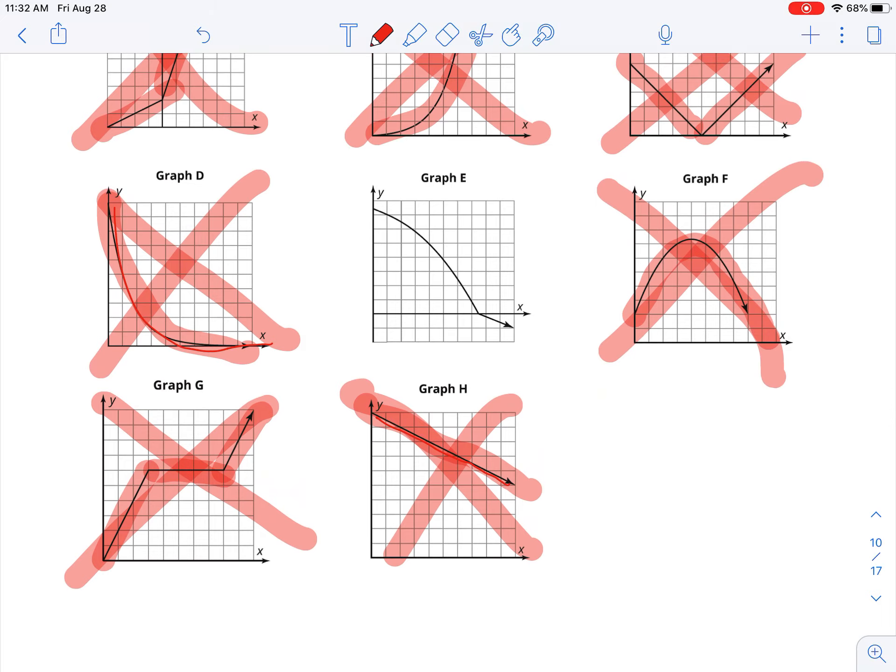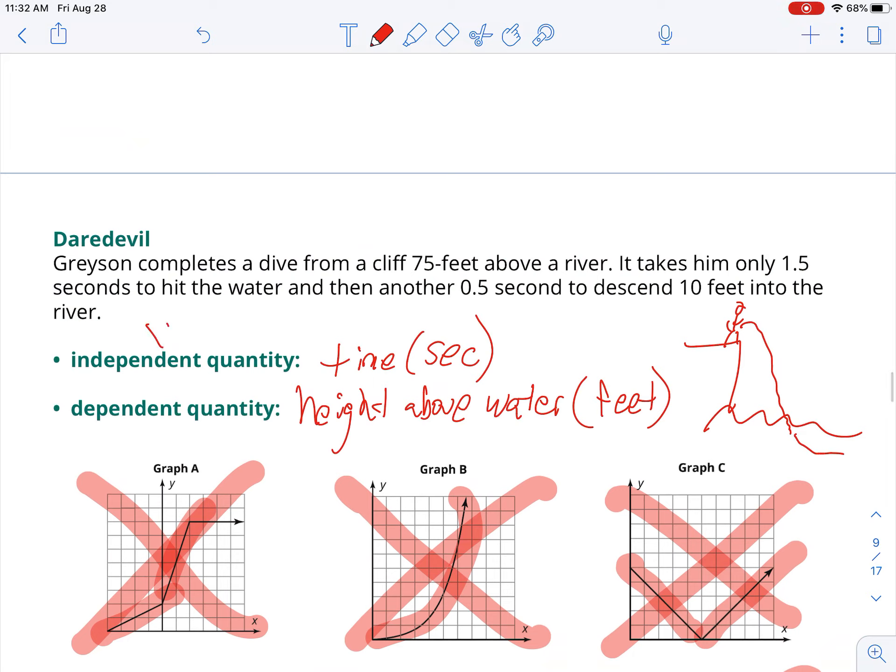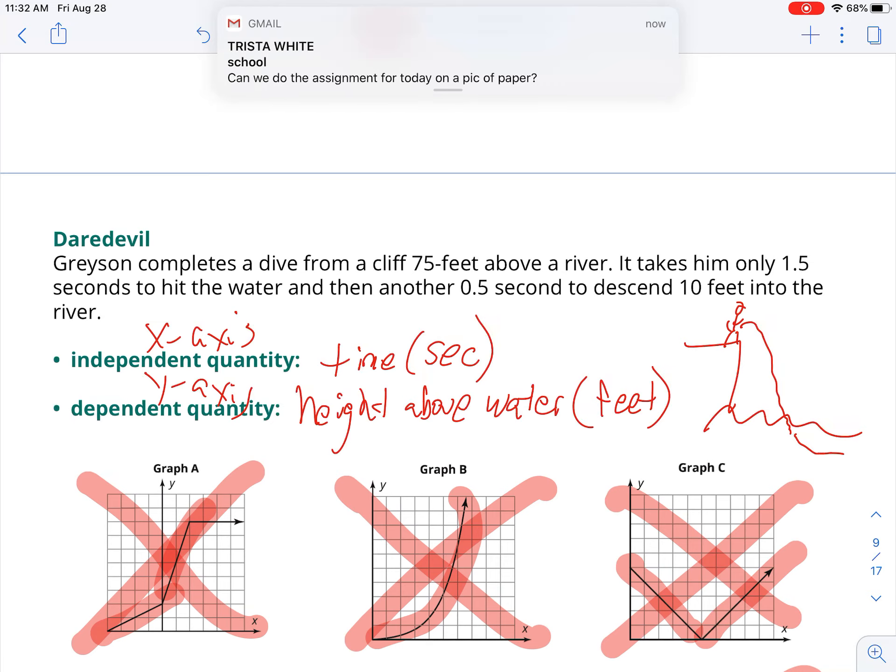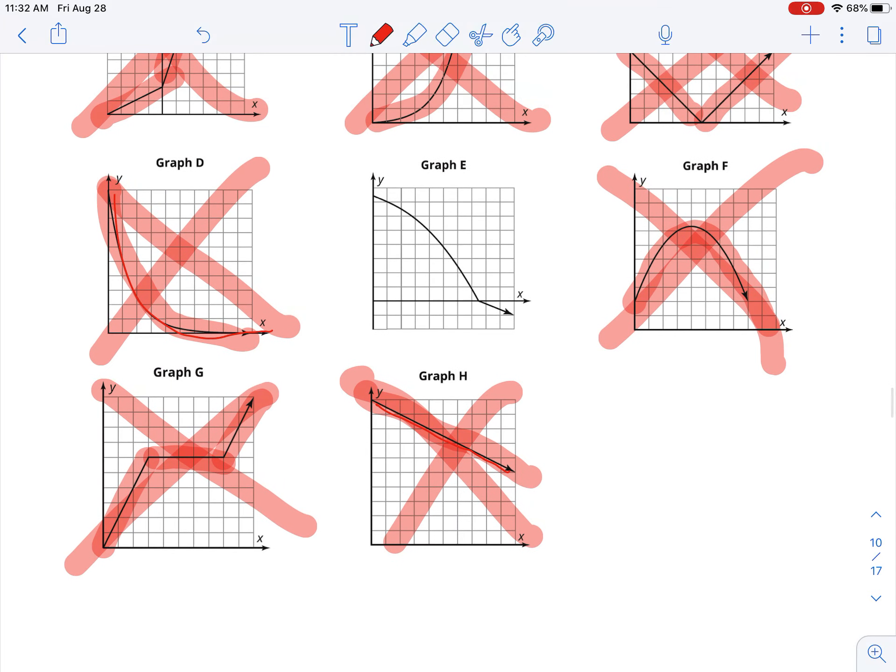Now, we're going to label the axes here, and the independent quantity is always your x-axis. Your dependent quantity is always your y-axis. So in this instance, graph E being the x-axis, I'm going to label that as the time we've already done. That was in seconds. And the y-axis is going to be the dependent that was the height above water. And that was in feet.